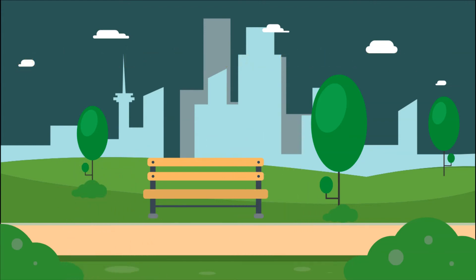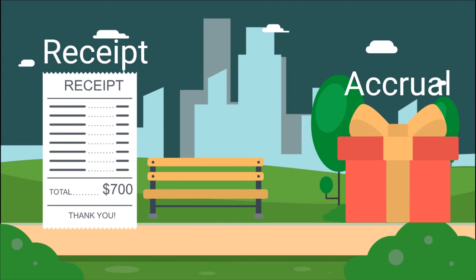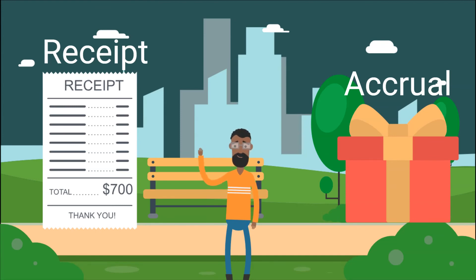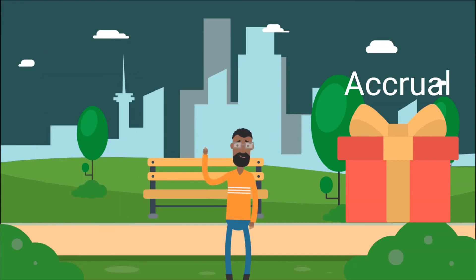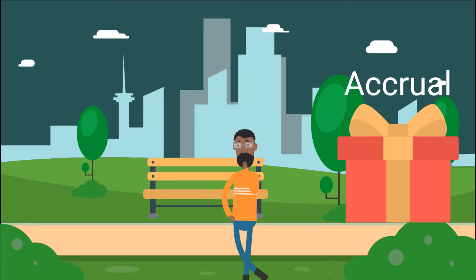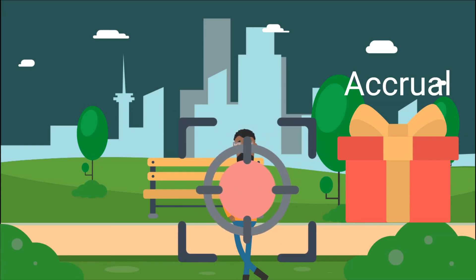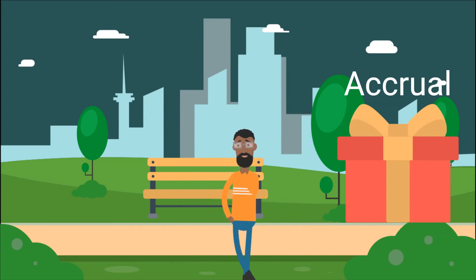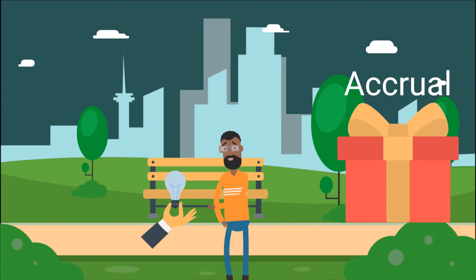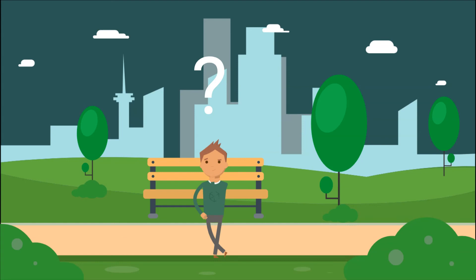Two very confusing terms are receipt and accrual. Amounts are included in gross income when they have been received by, or accrued to, the taxpayer — whichever happens first. If the amount has been beneficially received, there is a receipt for tax purposes, and there is no need to determine if there has been an accrual. It is only when there is no receipt that one needs to determine whether there has been an accrual — for example, has it accrued to you, or has it become due to you. An amount is accrued when a person is unconditionally entitled to an amount, even if he has not yet physically received the money or benefit.